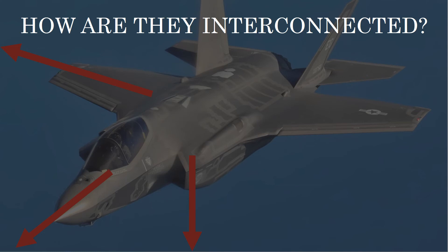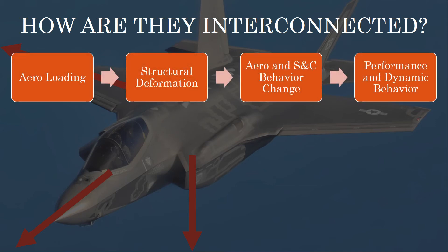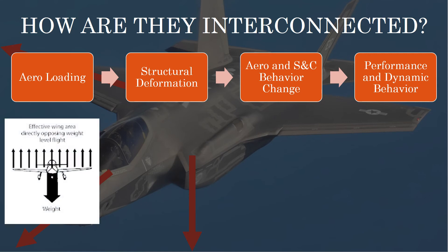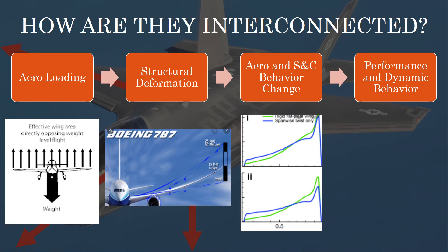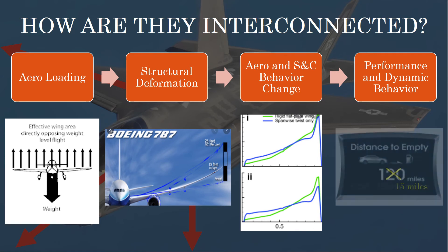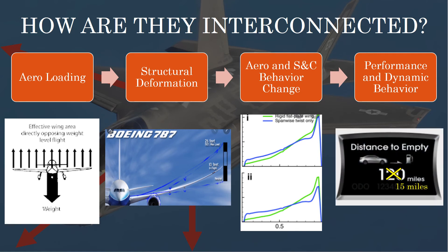So those are generally the three sub-disciplines that flight mechanics is broken up into. Let's have a quick example of how they might interact with each other. We start off with aero loading — as you're flying through the air, the air is causing forces and moments on the aircraft. Those forces and moments could lead to structural deformation; for instance, the wing might bend farther up or might twist. This could change the aerodynamics and stability and control behavior of the aircraft, and that change can affect performance as well as some of the dynamic behavior.